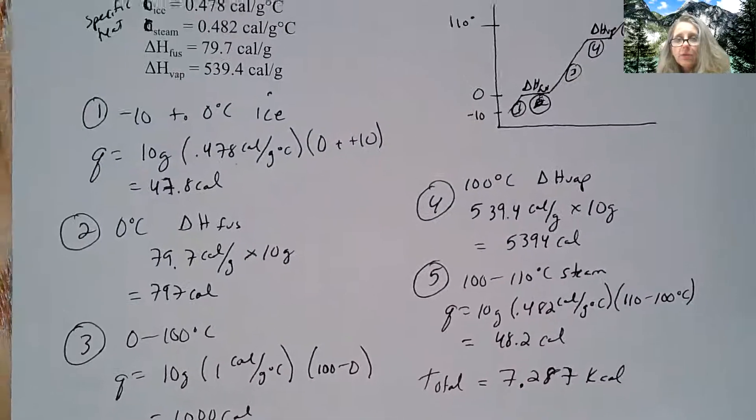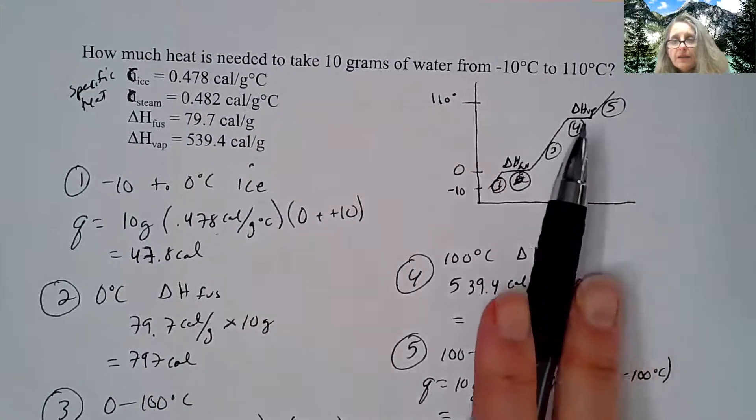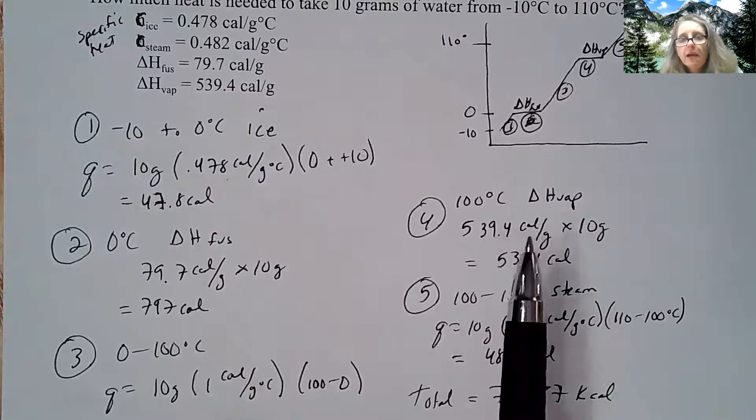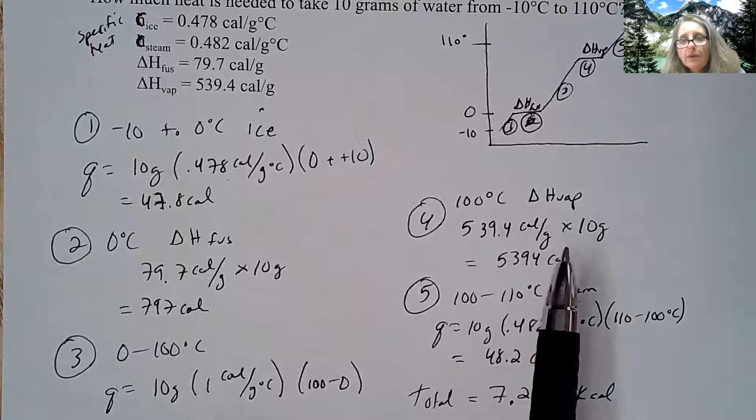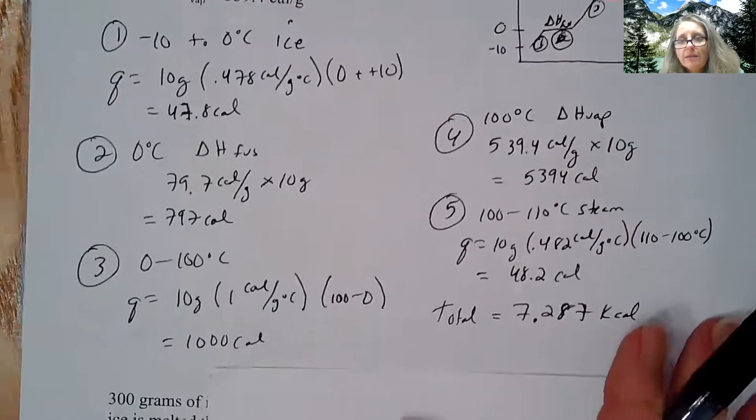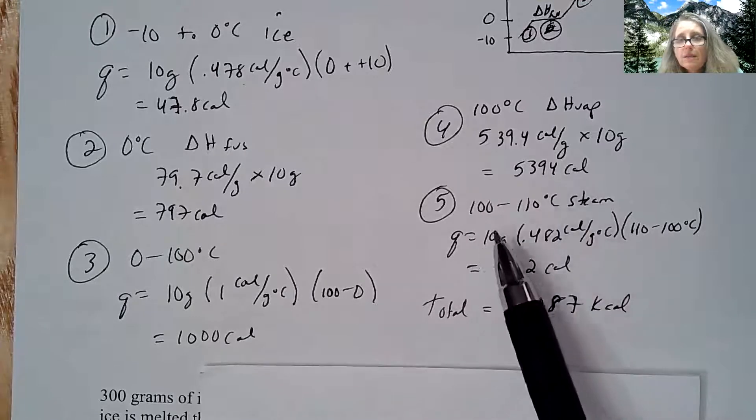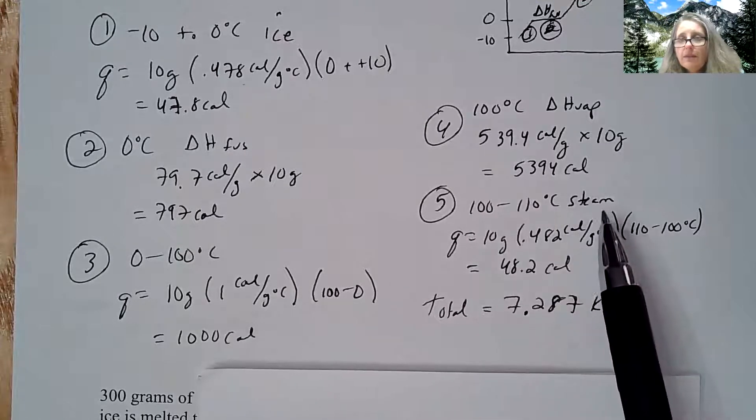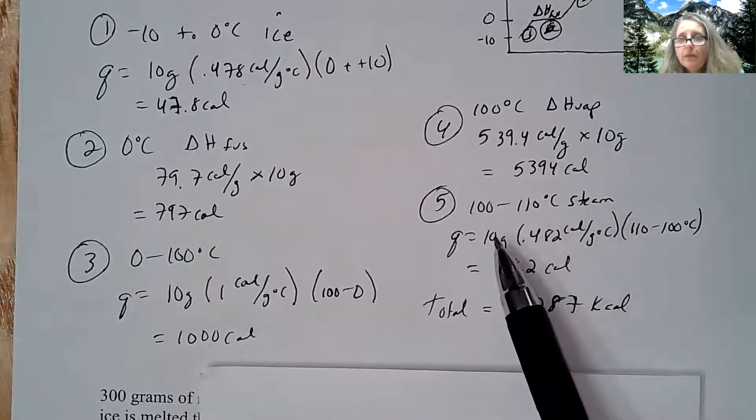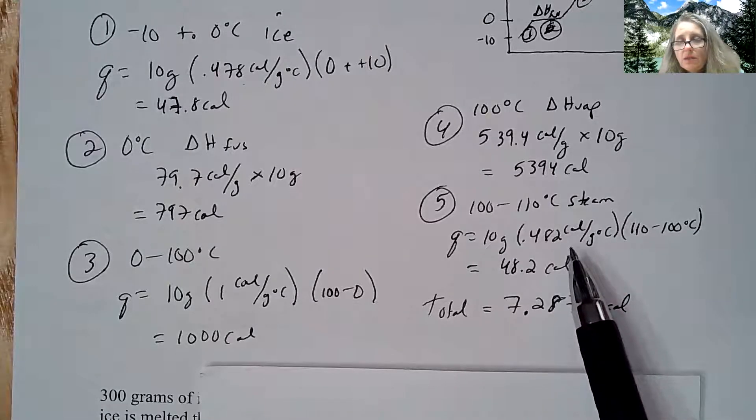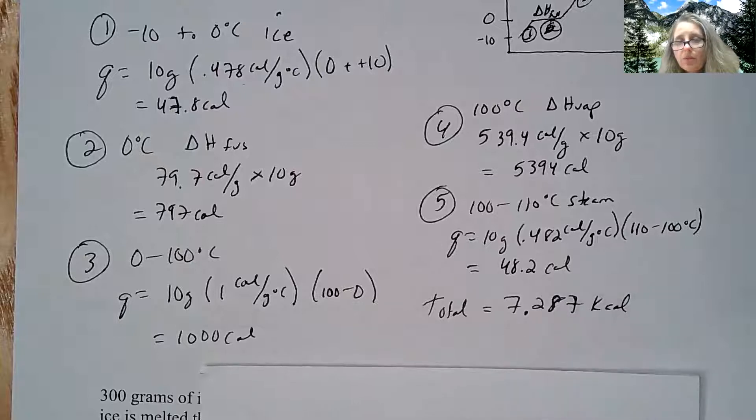Then step four up here, that's heat of vaporization. So I'm converting it all to vapor. So I'm going to take the 539.4 calories per gram multiplied by 10, I get 5394 calories. And then finally, I'm in the steam, I'm now converting everything to vapor. So then I multiply it using the specific heat of vapor. So I get 48.2 calories.